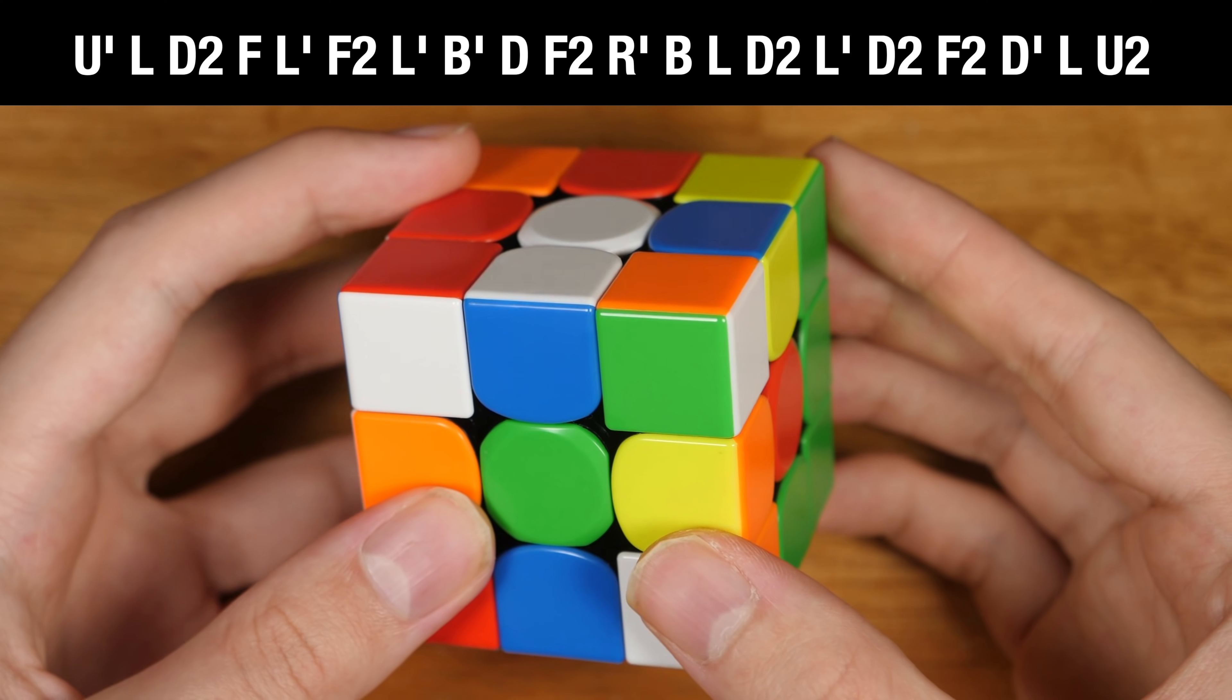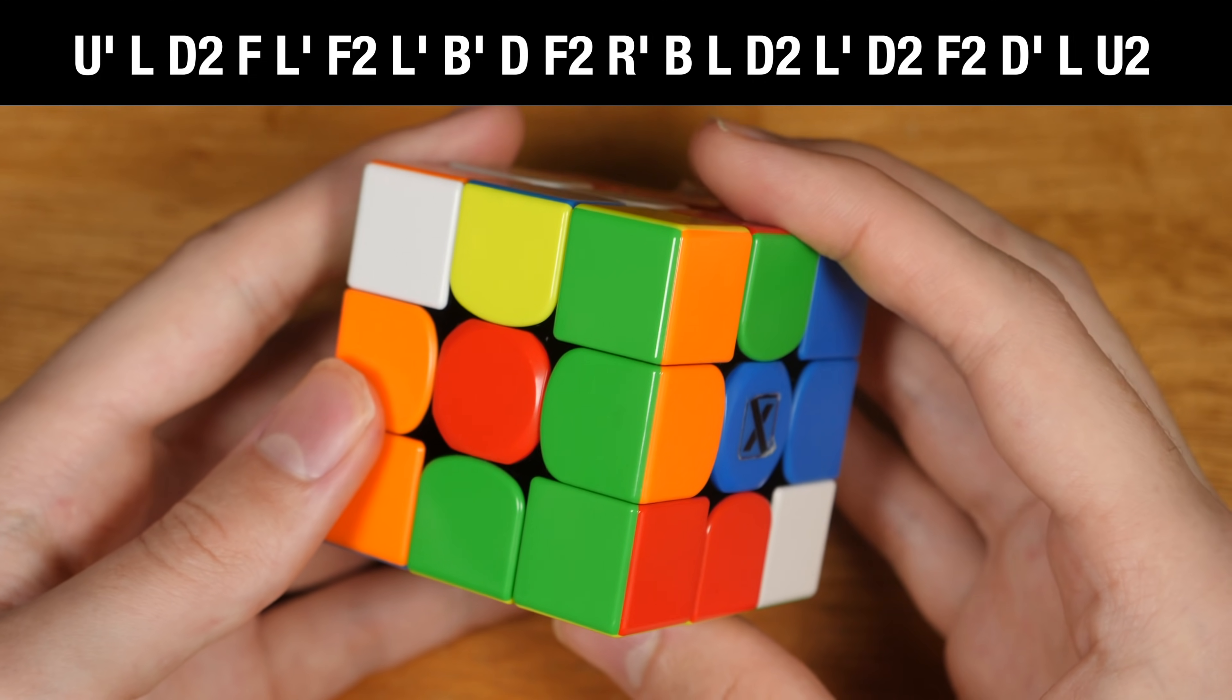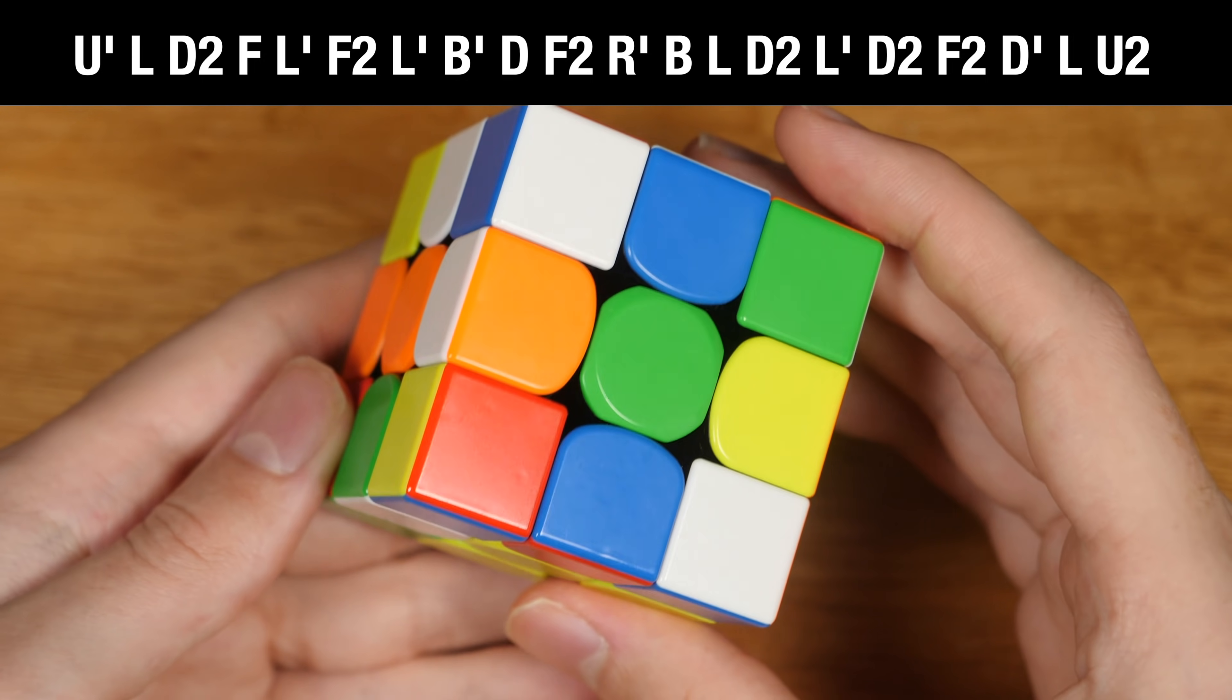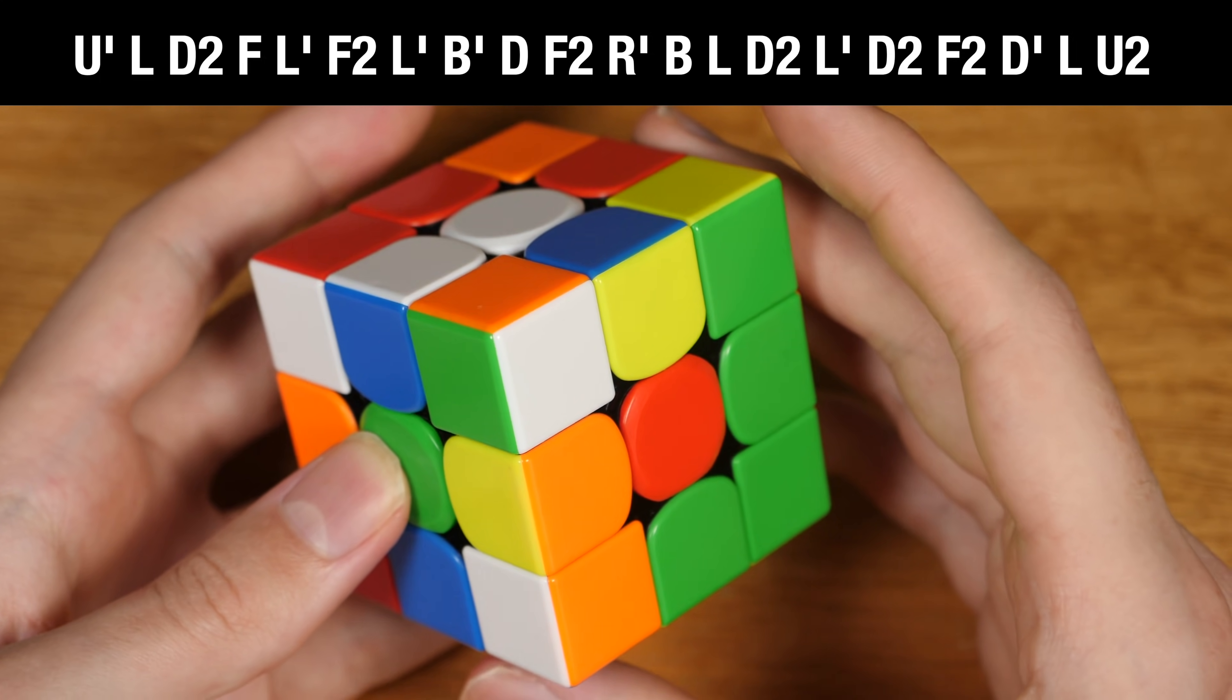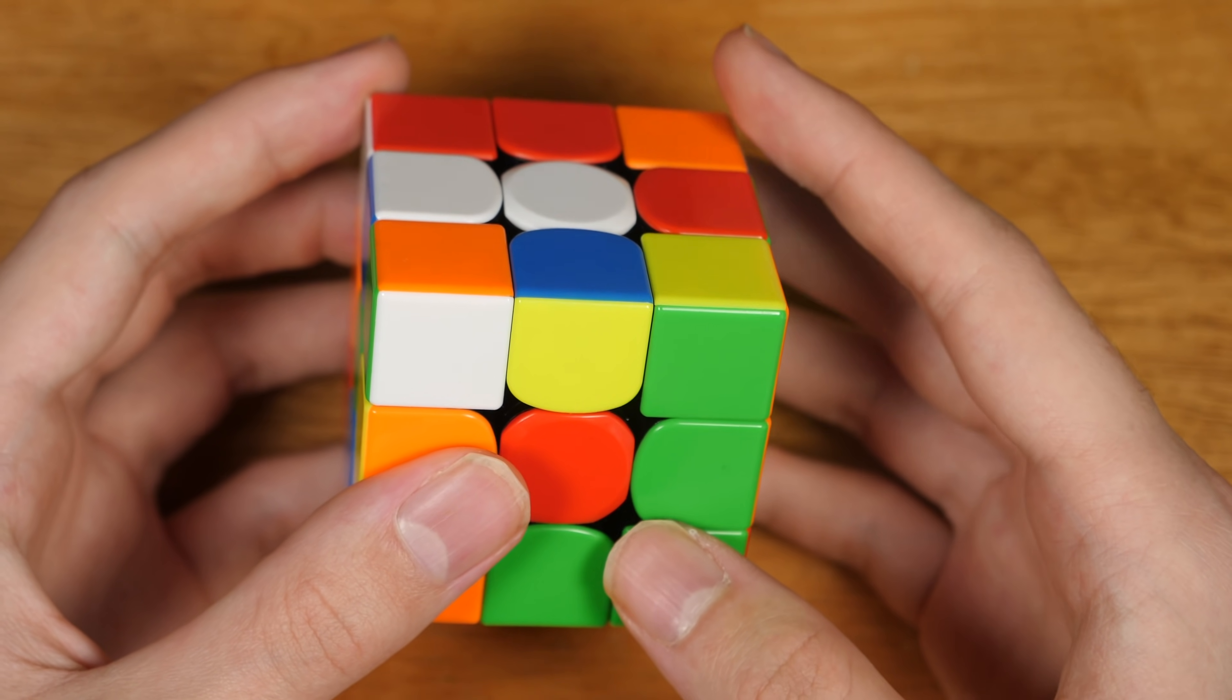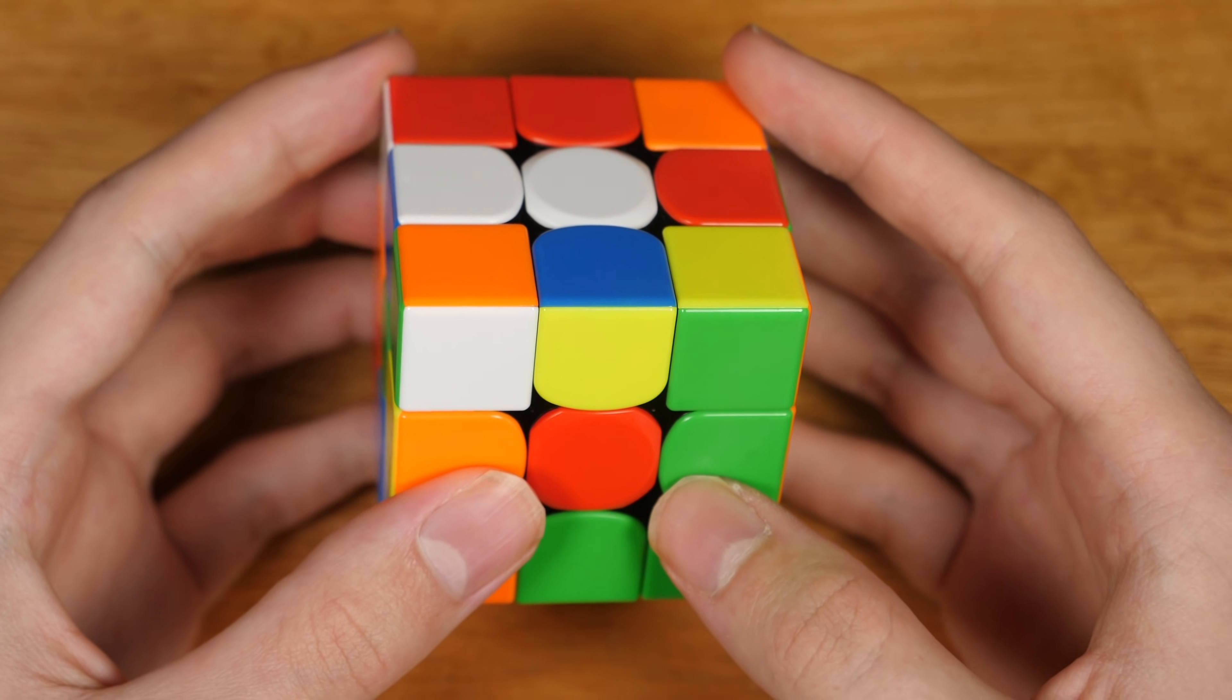Take a moment to inspect this scramble. How far can you plan? The cross? The first pair? How many pairs deep can you plan? Well, most top cubers will tell you that this scramble is so easy that you can actually plan the entire F2L in a very short amount of time.